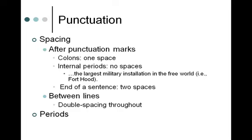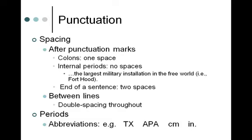In terms of periods with abbreviations: for Latin abbreviations like 'e.g.' and 'i.e.,' you do use periods, with no spaces between internal periods. But you don't use a period in an abbreviation for any states — so TX for Texas has no periods. The same applies to capital letter acronyms and initialisms: APA, SWPA, NATO — anything where all the letters are capitalized as initials of something. No periods in those abbreviations.